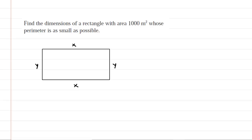Here we have to find the dimensions of a rectangle whose area is exactly 1000 meters squared and whose perimeter is minimized. So our first step is to draw a picture. We've drawn the rectangle and labeled the horizontal sides x and the vertical sides y.